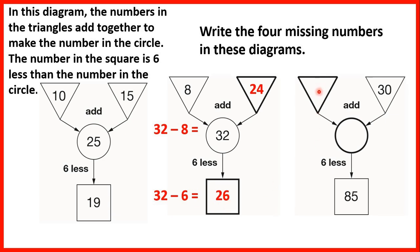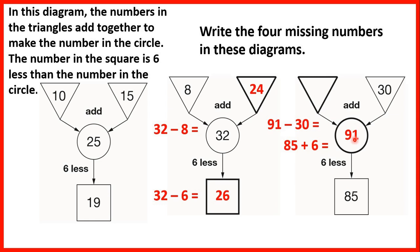Now here we have something plus 30 is something, so there are two numbers we don't know. So instead let's start with: something minus 6 is 85. So 85 plus 6 is 91, meaning 6 less than 91 is 85. So now we have something plus 30 is 91. Because it's a missing number we can use the inverse, and 91 minus 30 is 61.